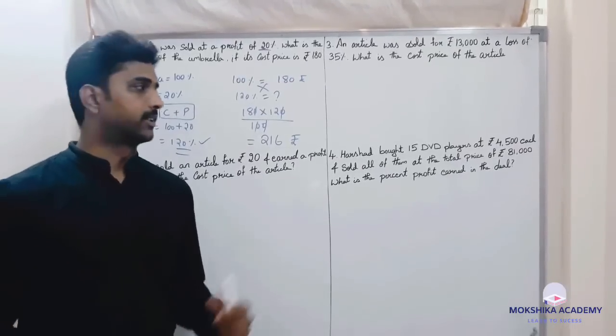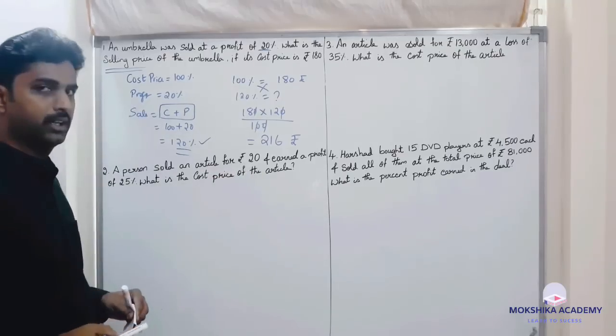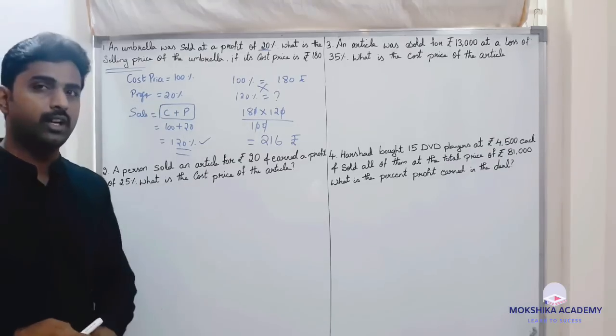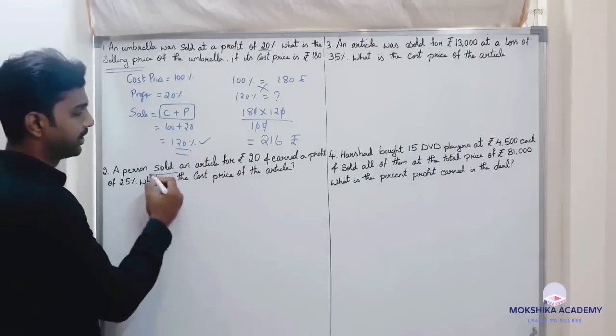See the second question students. Here a person sold an article for rupees 20 and earned a profit of 45 percent. What is the cost price of the article?